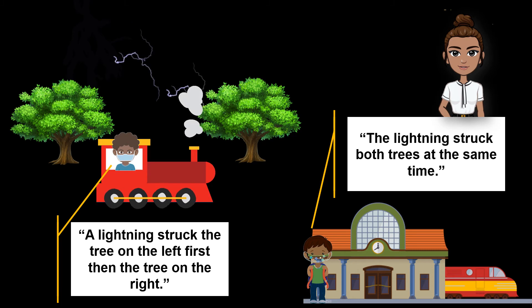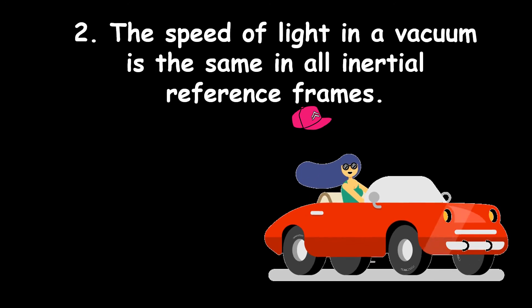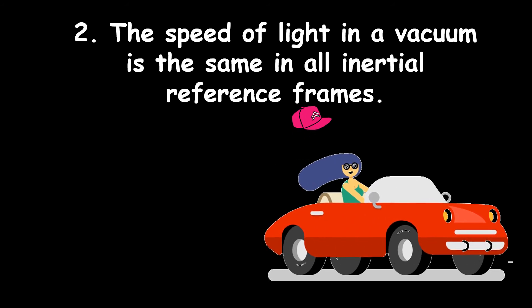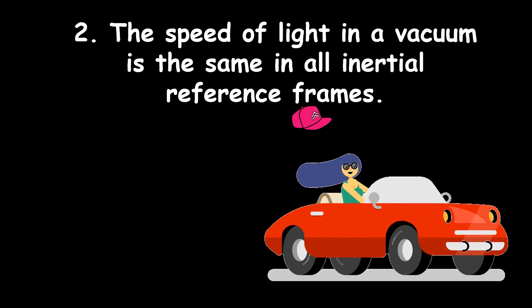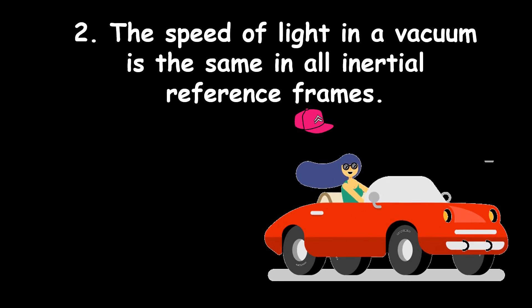This brings us to the second postulate. The second postulate means that for all reference frames, the speed of light, or c, is the same no matter what the relative speed is between the observer and that which is being observed, be it moving matter, flowing energy, or an event that occurs within invariant intervals of space and time.